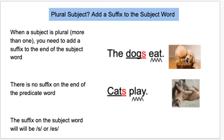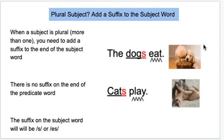Here are some examples. The dogs eat. This is a picture of more than one dog eating, so the subject is plural. As you can see, the subject word is dog — it's underlined — and I had to add an S to the end of the subject word so it agrees with the predicate. If I had written 'the dog eat,' that wouldn't make any sense because it doesn't sound right, and there's more than one dog here.